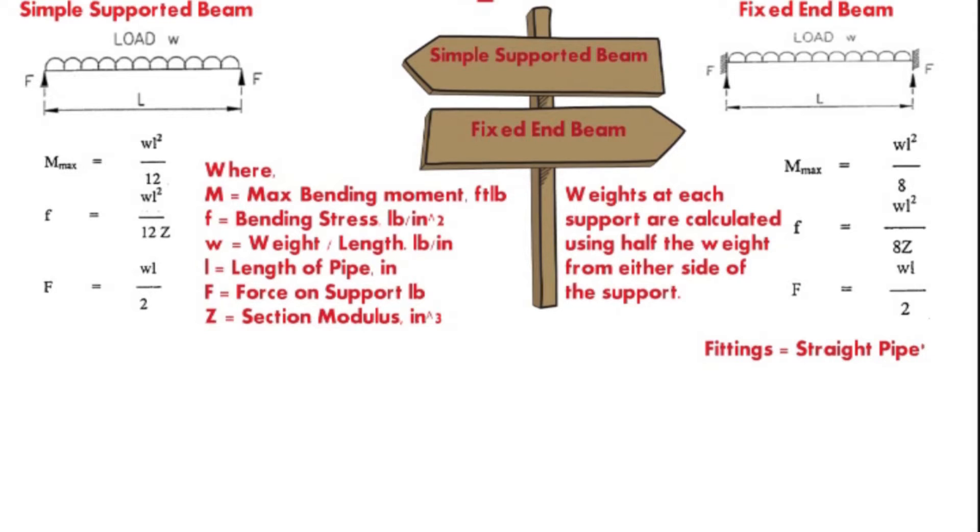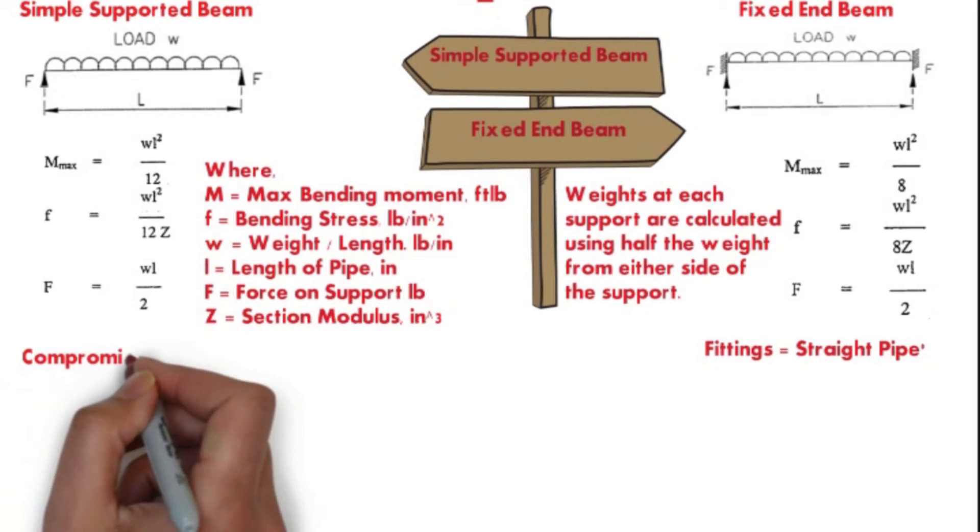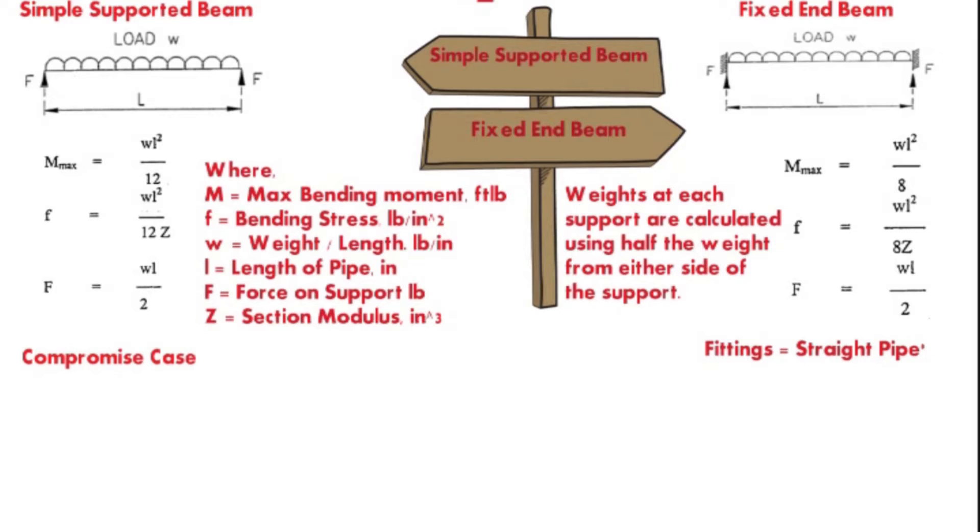If the pipe runs between the supports are equally loaded or of equal length segments, rotation could cancel each other, causing the pipe to behave like a fixed end beam. Therefore, the two cases lie somewhere in between the two models.